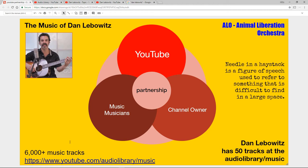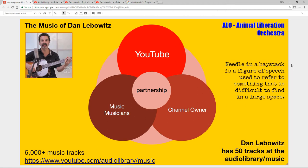I really agree with this phrase: finding good music in all that mass of the internet — even though it's a YouTube.com URL — is like finding a needle in a haystack. So how do we find something? Notice in the top right in blue: A-L-O, Animal Liberation Orchestra.